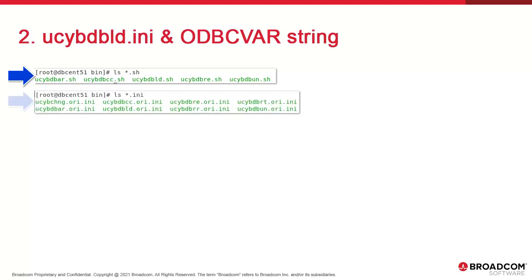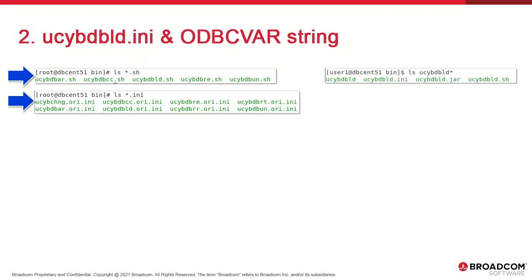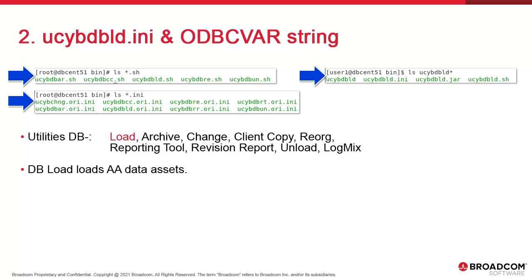Running ls *.ini produces their matching configuration files. Let's consider dbload. We have a ucbdb_ld.sh and a matching ucbdb_ld.ori.ini. If we ls ucbdb_ld*, we see the .sh, the .ini, the jar file to invoke the utility using Java, and the executable with no extension, which can be invoked with options. Utilities perform a number of tasks: dbload loads data in the database, there's an archive utility, db change makes alterations to exported data, client copy is a data duplication service, reorg performs maintenance, there's reporting and revision reporting, a tool to unload data from the db, and finally logmix, which produces files combining logs, reports, and traces.